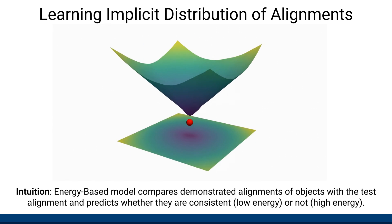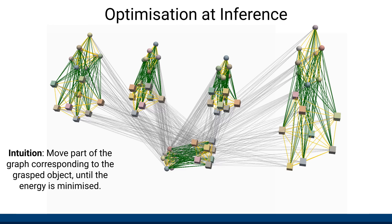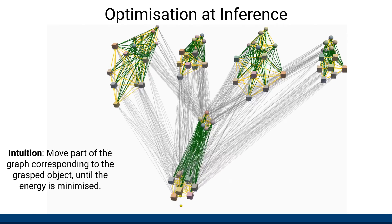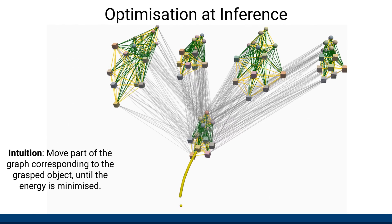At inference, we can find the alignment between novel objects that are consistent with the demonstrated ones by finding the minima of the learned energy landscape. We do so using gradient-based optimization directly on the graph representation by updating part of the graph that corresponds to one of the test objects.